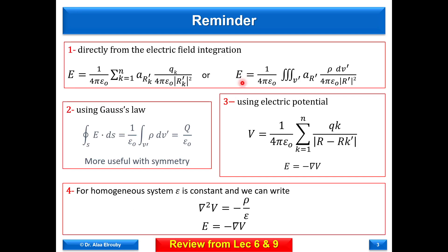So far we had talked about four different methods to solve electrostatic problems: direct integration of continuously distributed charges or summation of discrete charges from the electric field, or similarly integration or summation of the electric potential because of discrete or continuous charges followed by the gradient of the potential function to find E. If we have symmetry, we use Gauss's law. Another method is analytically, if we have the charge distribution, to use Poisson's equation and Laplace equation. This is beside the method of images.